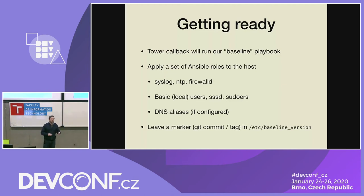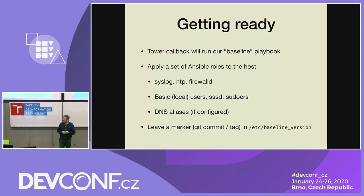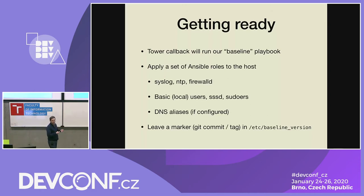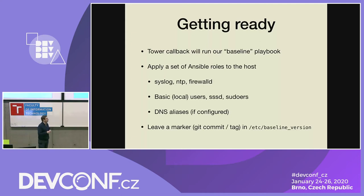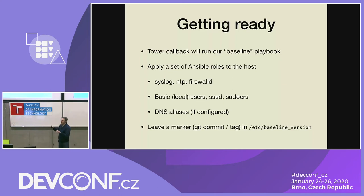For the administrative side, we need to be able to access this host with our user accounts, because initially the host is provisioned without any IDM — identity management integration. So we want our administrative accounts to be able to log in there, to have sudo access, and also if there are more hostnames than just the initial one we chose in Satellite, we want to do some DNS setup. At the very last step, the baseline playbook puts a version marker — similar to an LSB release — in the /etc directory, so we know which version of baseline last touched this host.